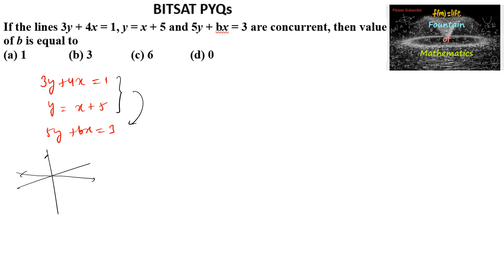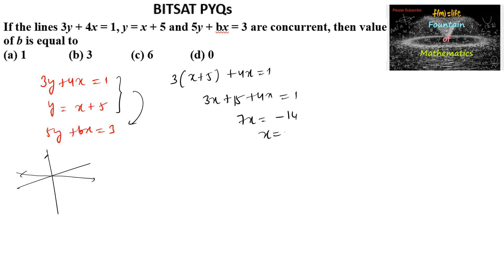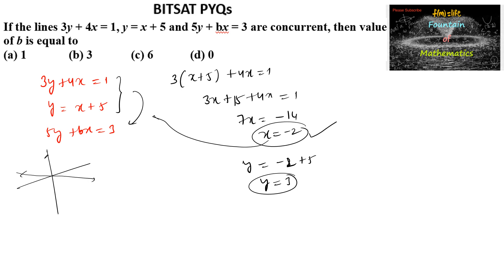From y = x + 5, substituting into 3y + 4x = 1: 3(x + 5) + 4x = 1, giving 3x + 15 + 4x = 1, so 7x = −14, thus x = −2. Substituting back: y = −2 + 5 = 3. So the point of intersection is (−2, 3).